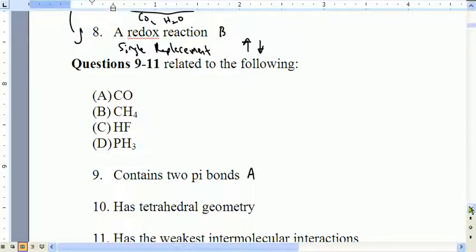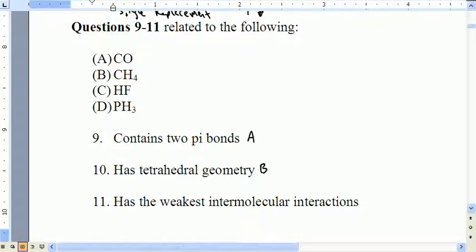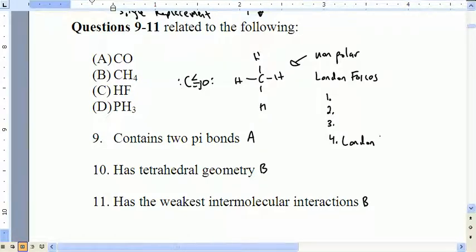It contains two pi bonds. That's going to be A, has a tetrahedral geometry. That's going to be B, and has the weakest intermolecular interactions. That's going to be B as well. I should have indicated that you can use those twice. The reason why 9 is A is that the Lewis structure ends up looking like this. There is your sigma, and everybody left over is the pi. Tetrahedral geometry, we know that methane looks like this. And weakest intermolecular interactions, we know this is going to be non-polar. And the intermolecular forces are going to be London forces. And that shows up at the bottom of the chart, the sticky chart. So that is the weakest.